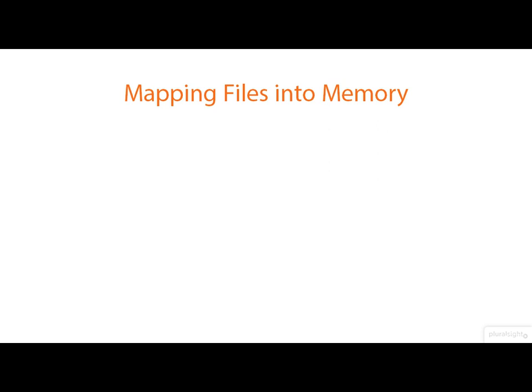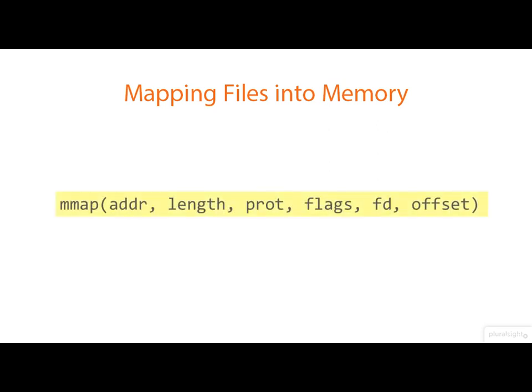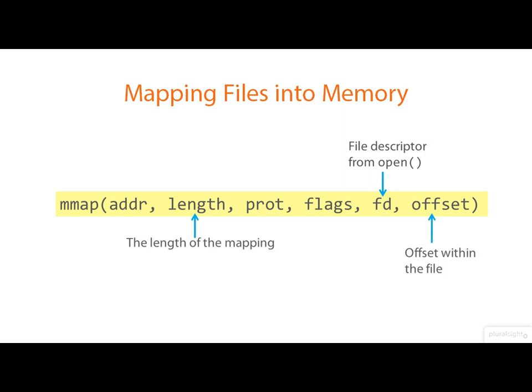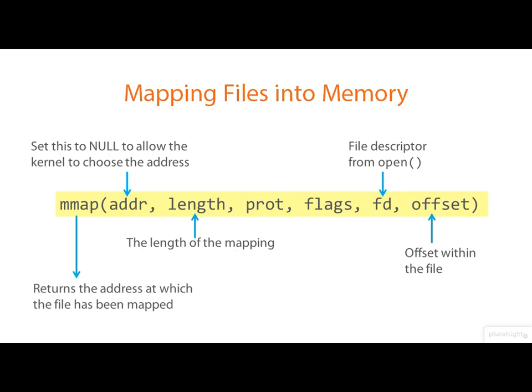mmap takes six arguments. You need an open file descriptor for the file that you want to map. The offset and length arguments specify which piece of the file you want to map — offset must be a multiple of the page size, and very often it's zero and you map in the entire file. The first argument can be used in theory to suggest an address at which the mapping should be placed, but commonly this is set to null, allowing the kernel to choose the address.